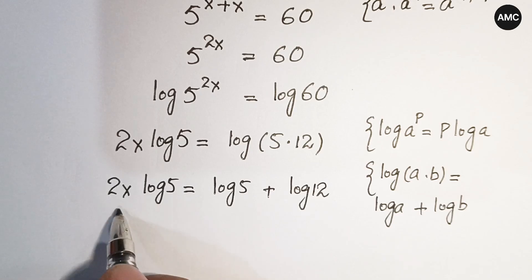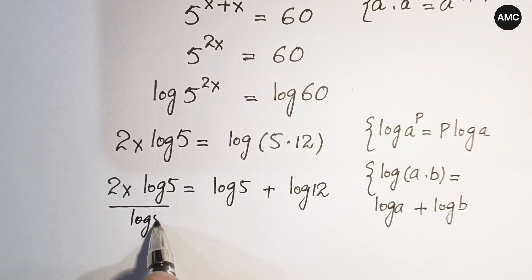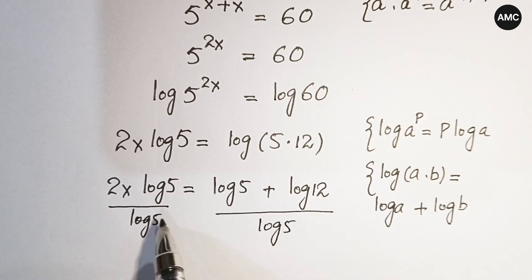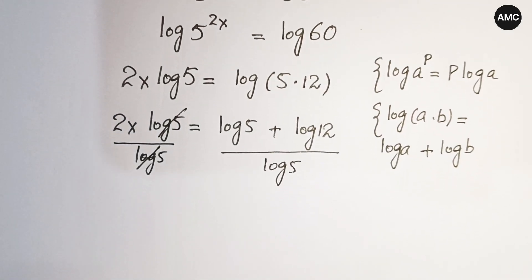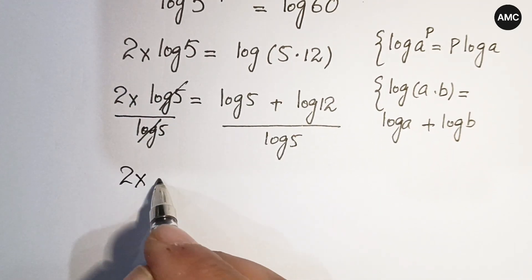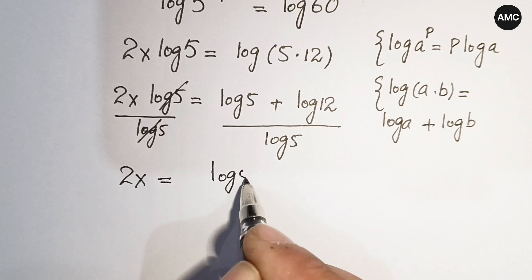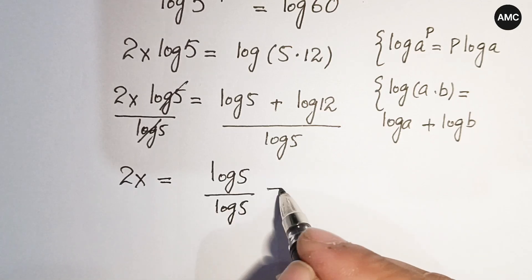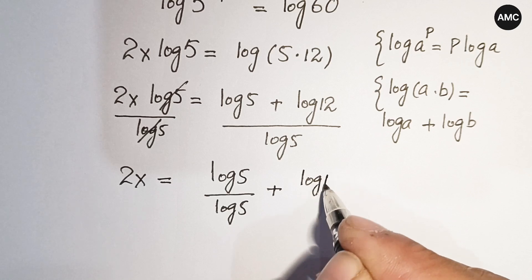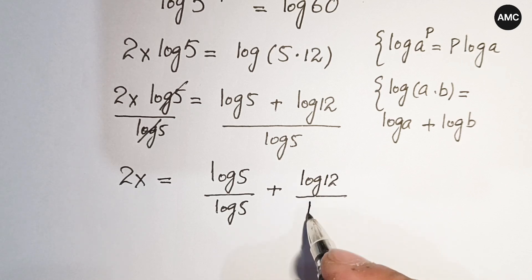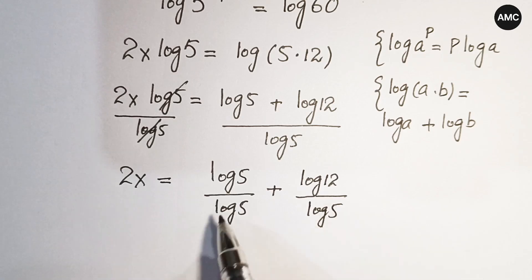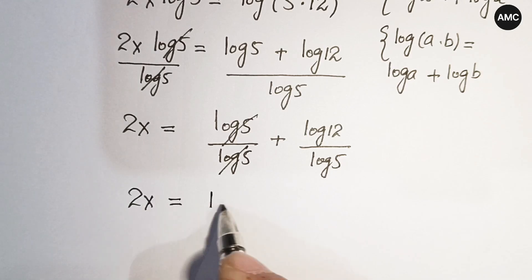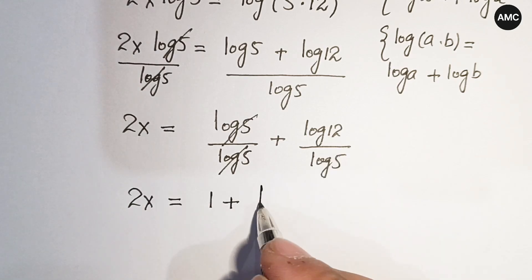Now if we divide both sides by log 5, the log 5 on the left cancels, giving us 2 times x equals 1 plus log 12 over log 5. Writing the denominator log 5 under both terms, we get 2x equals 1 plus log 12 over log 5.